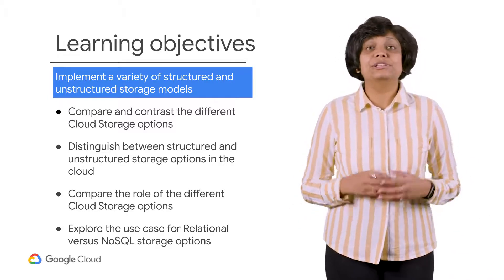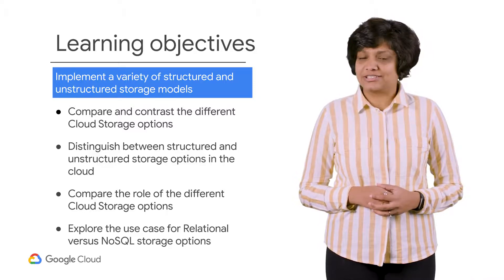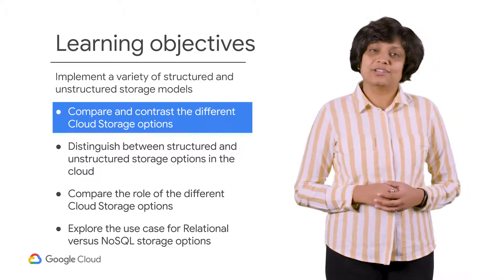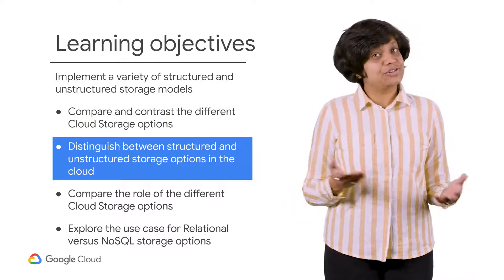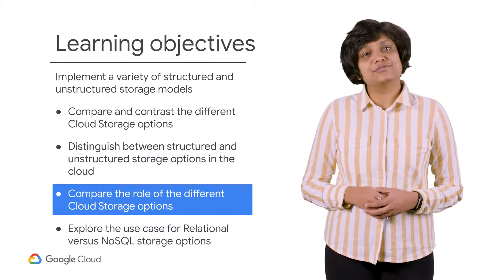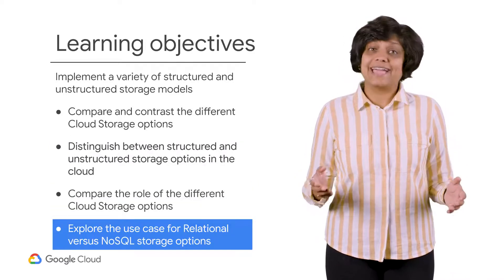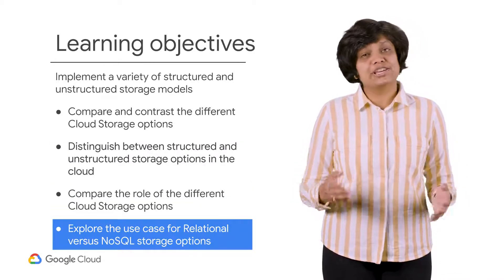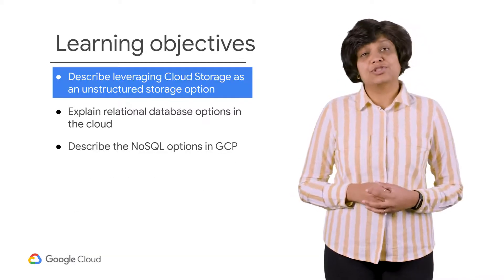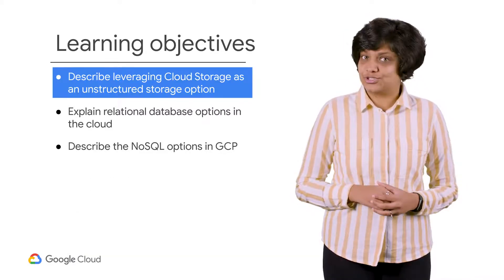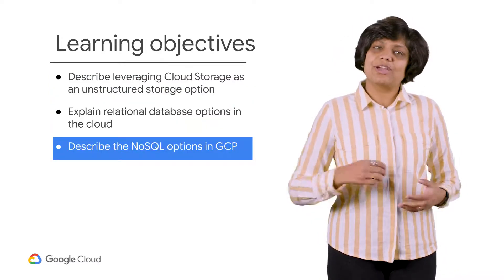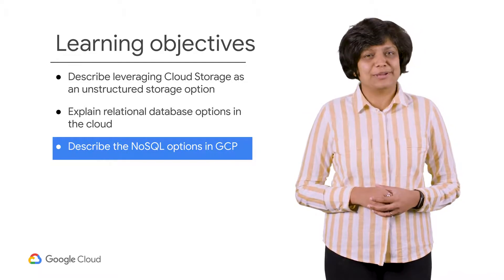To achieve this goal, you will need to meet the following learning objectives: discuss the different storage options that exist in the cloud; differentiate between structured and unstructured storage in the cloud; compare the role of the different cloud storage options; and explore the use case for relational versus NoSQL storage. You'll also describe leveraging cloud storage as unstructured storage, explain relational database options in the cloud, and describe the NoSQL options in GCP.